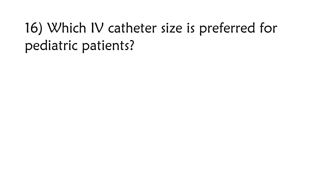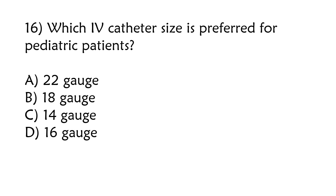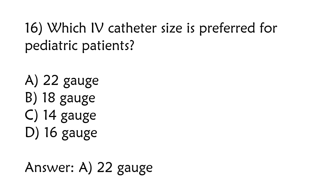Which IV catheter size is preferred for pediatric patients? 22 gauge, 18 gauge, 14 gauge, 16 gauge. The correct answer is Option A: 22 gauge.